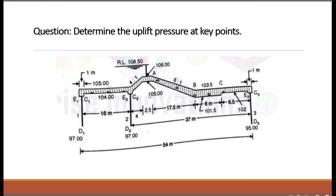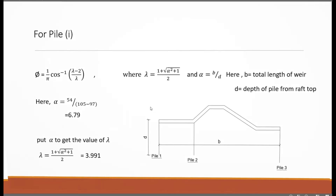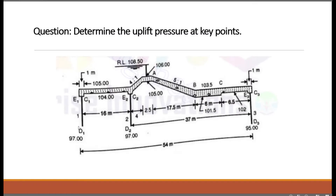Our main objective is to calculate key pressure at these three piles. For pile one — pile one, pile two, and pile three are shown in the figure. We have to calculate the uplift pressure at E1, D1, and C1. The uplift pressure at E1 is always 100% and at C3 is always 0%; upstream is 100% and downstream end is always 0%.